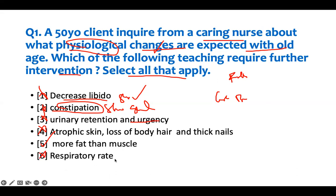Respiratory rate goes down in the elderly. More fat than muscle is expected — fat goes up, which is normal aging. In the older patient, all physiological adaptation changes are towards decline. The only thing that increases is body fat. This is the end of the three questions.